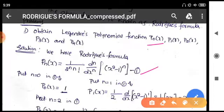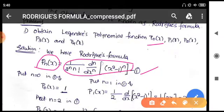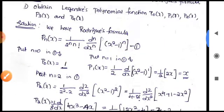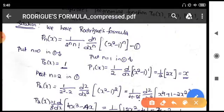First we have to get P0(x). To get P0(x) from Pn(x), we put n equal to 0 in equation 1. So when you put n as 0, we get P0(x) equal to 1. So P0(x) = 1.